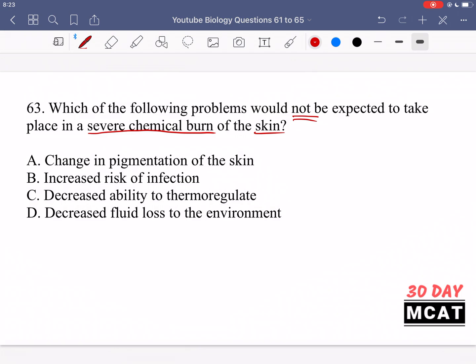Option A is saying there's a change in pigmentation of the skin. This is something we do expect because we have pigment cells within our skin that are responsible for our skin color and if we have a severe burn then these cells are damaged and we see a change because these pigment cells are not able to do their normal function. Option B is saying increased risk of infection. Yes, the skin is our first barrier against outside pathogens so if this is damaged then we do have an increased risk of infection.